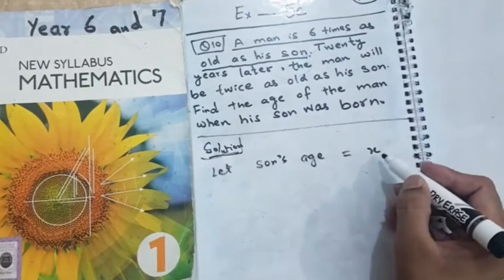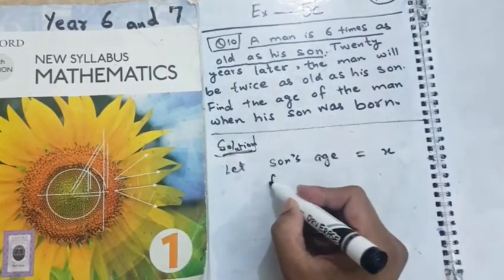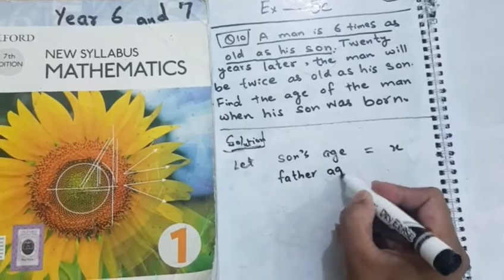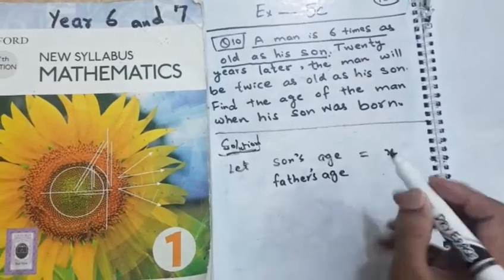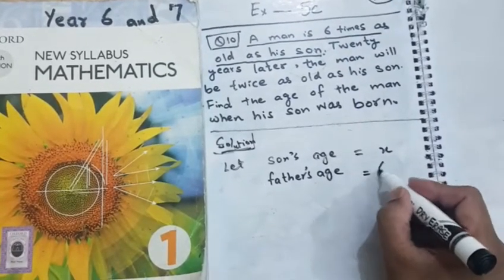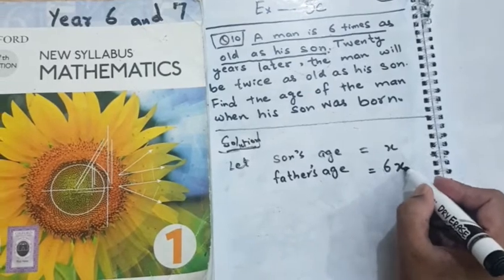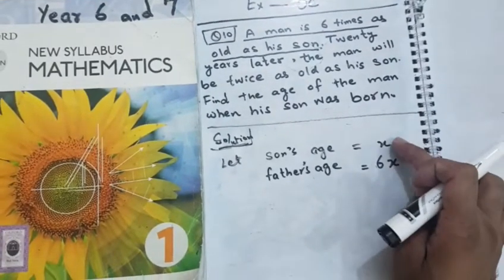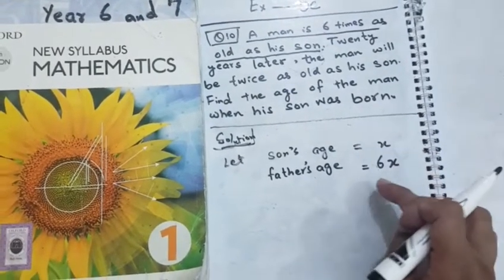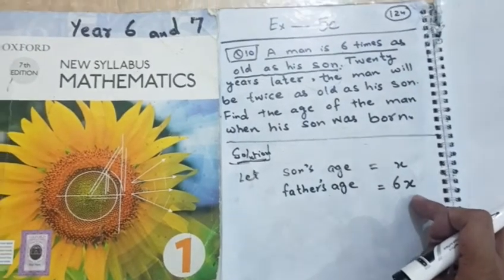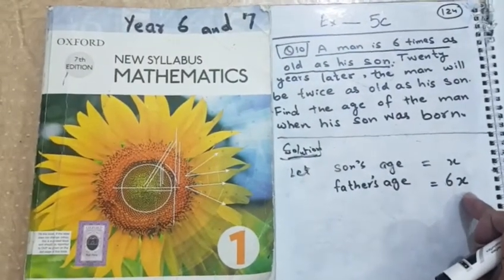If the son's age was x, then his father's age will be father's age or the man's age is six times of the son's age. Son's age was x. So his father's age will be six times of it. I mean, it will be 6x.